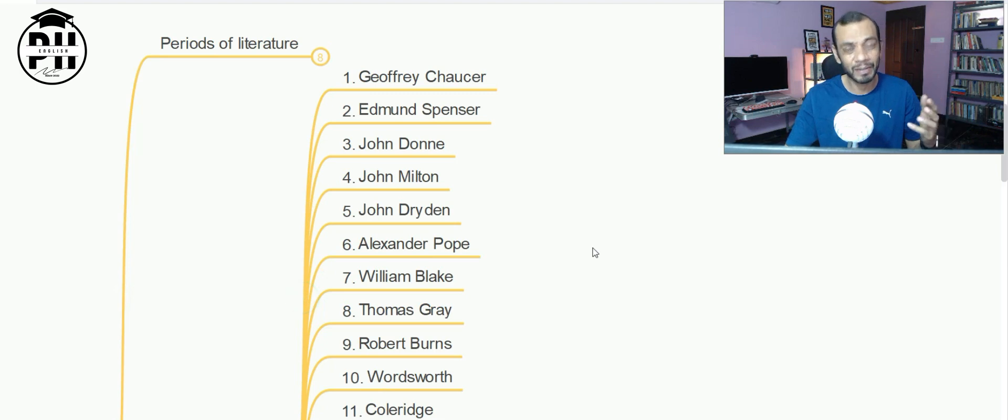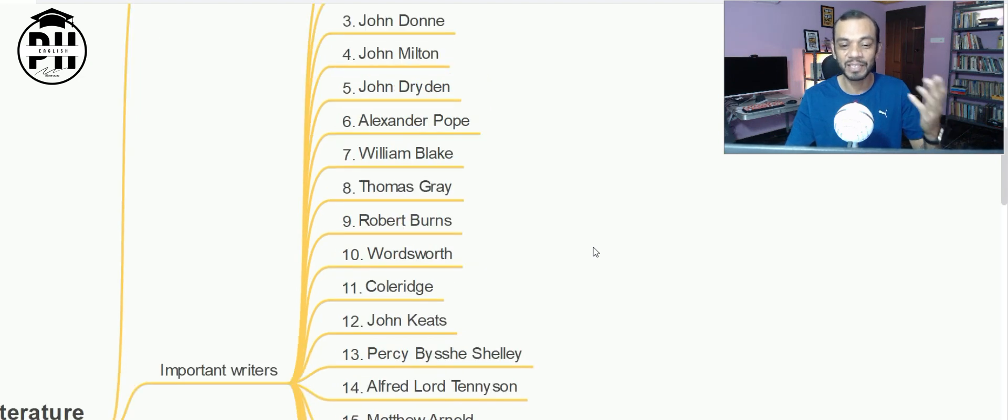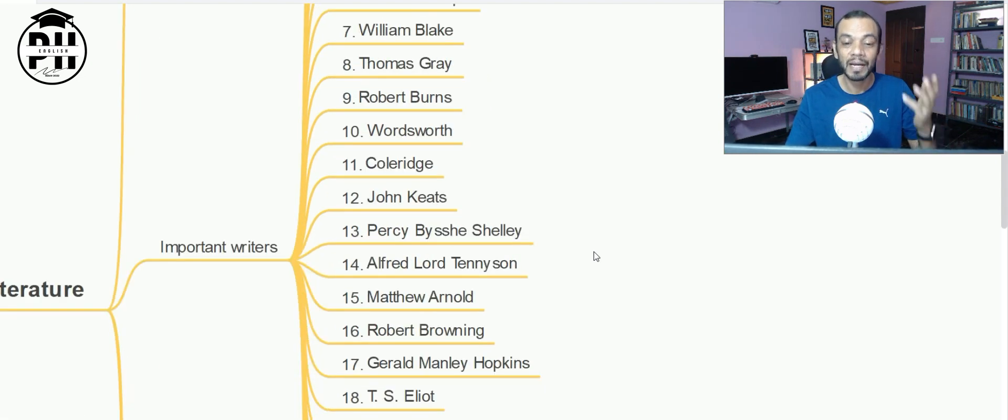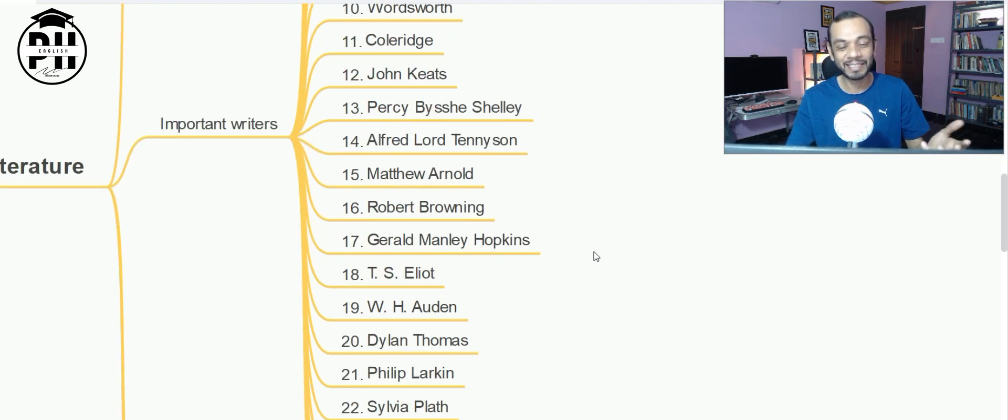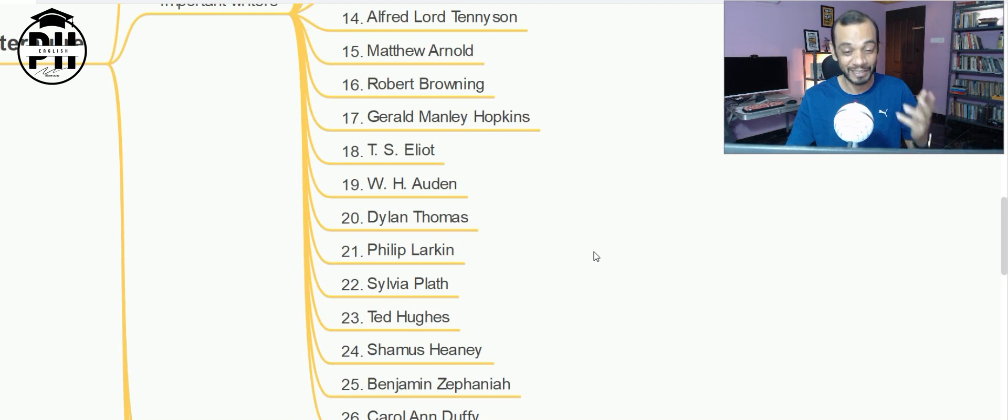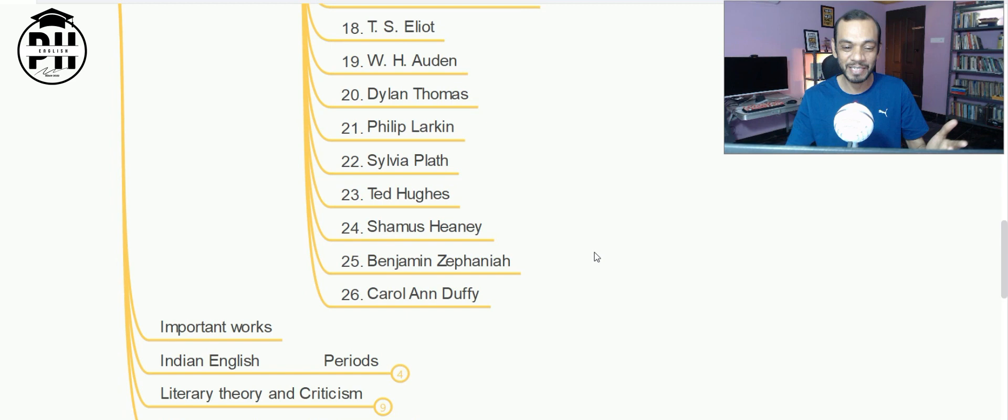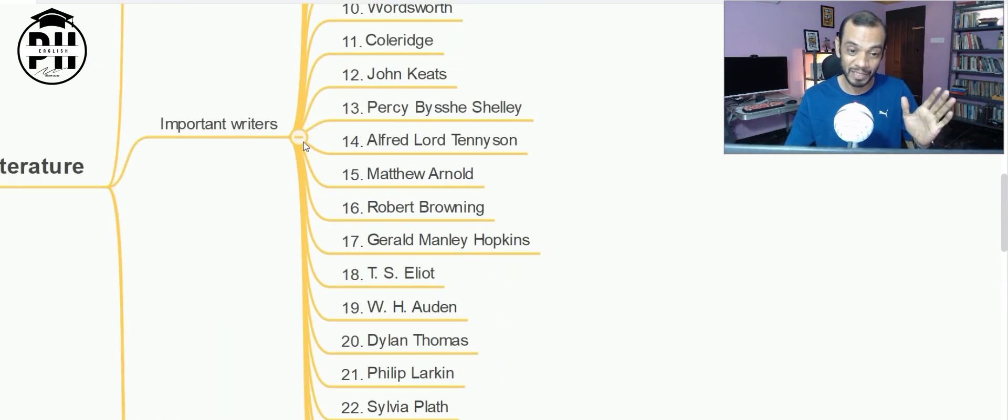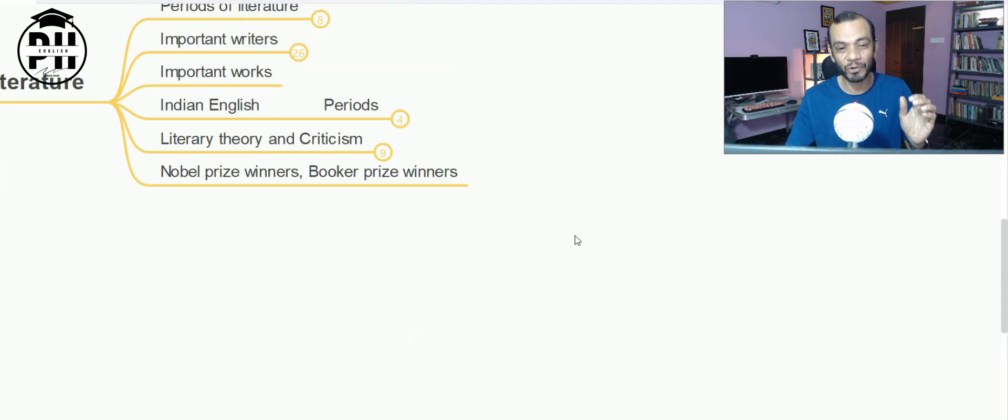Try to understand who are the writers. The second thing is important writers. There are a lot. Some of the key writers from British literature I found: Geoffrey Chaucer, Edmund Spenser, John Donne, Dryden, Alexander Pope, William Blake, Thomas Gray, Robert Burns, William Wordsworth, Coleridge, John Keats, Shelley, Tennyson, Matthew Arnold, Robert Browning, Gerard Manley Hopkins, T.S. Eliot, W.H. Auden, Dylan Thomas, Philip Larkin, Sylvia Plath, Ted Hughes, Seamus Heaney, Benjamin Zephaniah, Carol Ann Duffy.